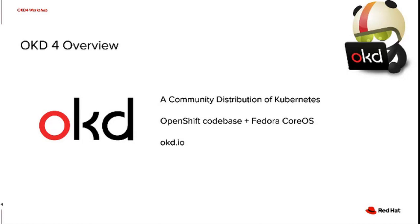So what is OKD? It is a community distribution of Kubernetes, but it's actually more than that. It's a community distribution of Kubernetes that is built off of the OpenShift code base. It is the same code that you are running in your data center or on your cloud provider if you are a Red Hat OpenShift subscriber. The only variation is that rather than running on Red Hat CoreOS, we're running on the upstream of Red Hat CoreOS, which is Fedora CoreOS. So you've got the OpenShift code base with Fedora CoreOS as the underlying operating system.